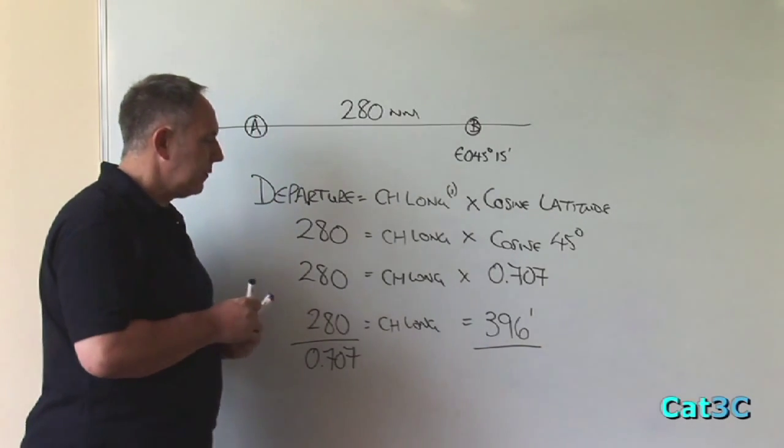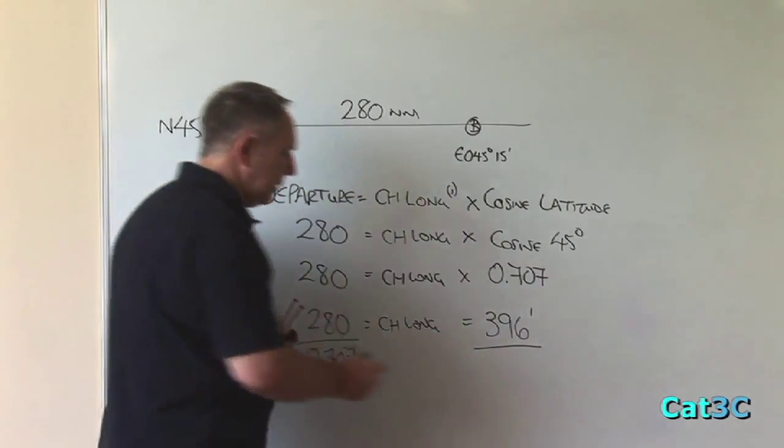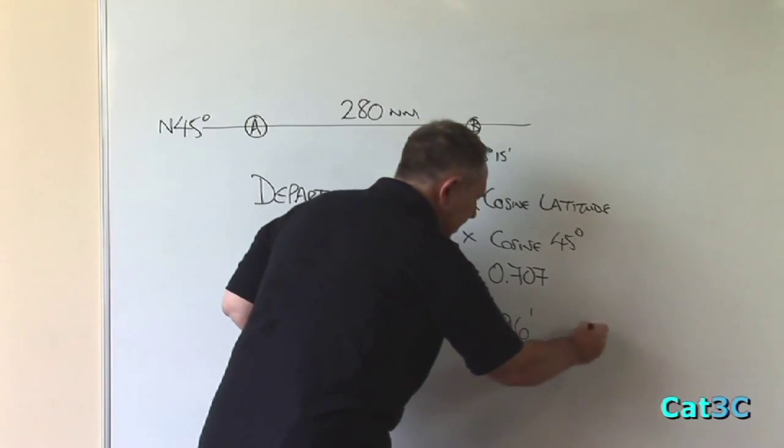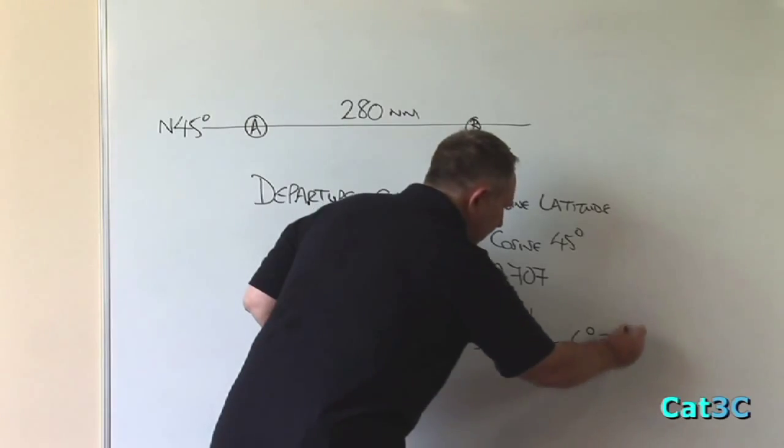If we convert that into degrees and minutes by dividing by 60 minutes, it gives me 6 degrees and 36 minutes.